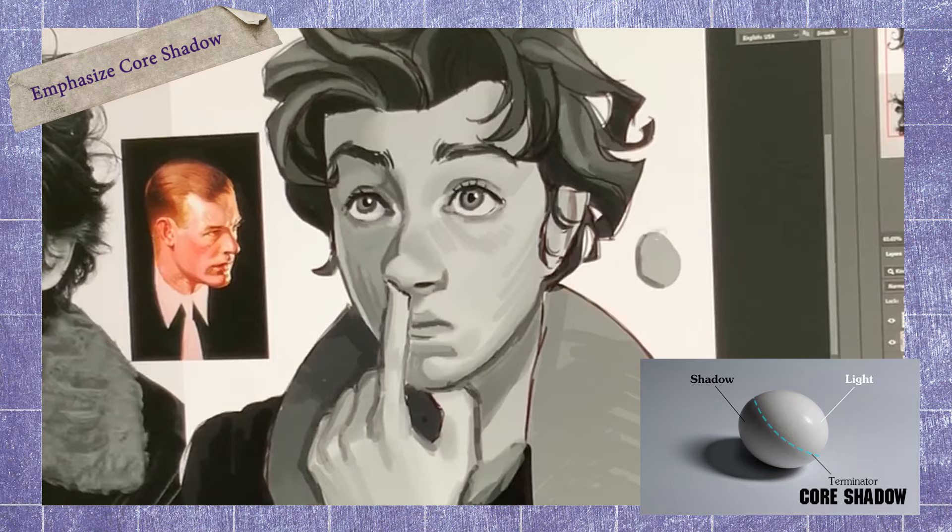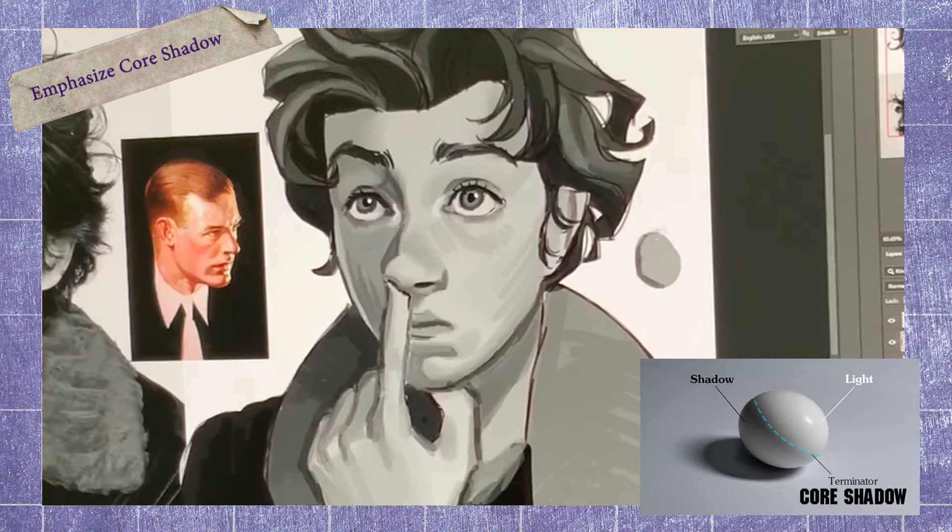When Leyendecker renders the face, he likes to emphasize the core shadow — the dark band visible where light and shadow meet. Usually he makes the core shadow darker and more saturated compared to other areas.